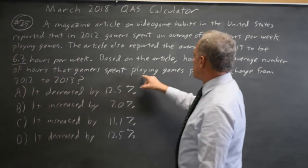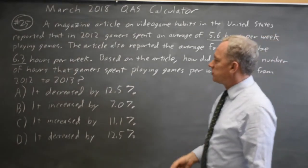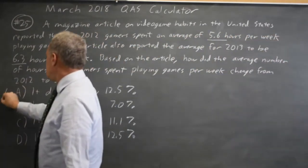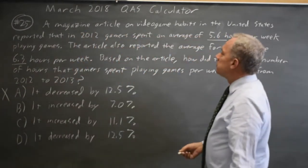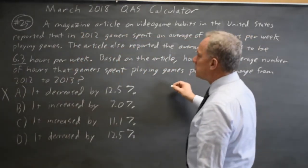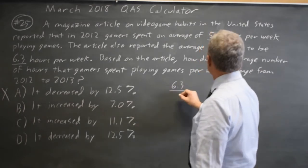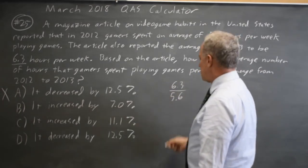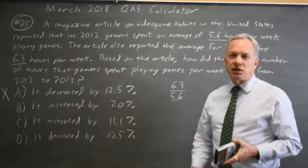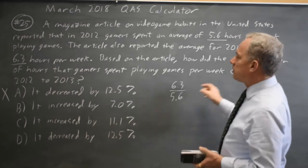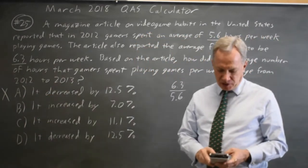How did the average number of hours gamers spent playing games change from 2012 to 2013? That was an increase, not a decrease, so choice A is wrong. To find how much it changed, we find 6.3 over 5.6 — that's the percent of the original amount. We're taking the change from 2012, so the denominator will be the number from 2012.